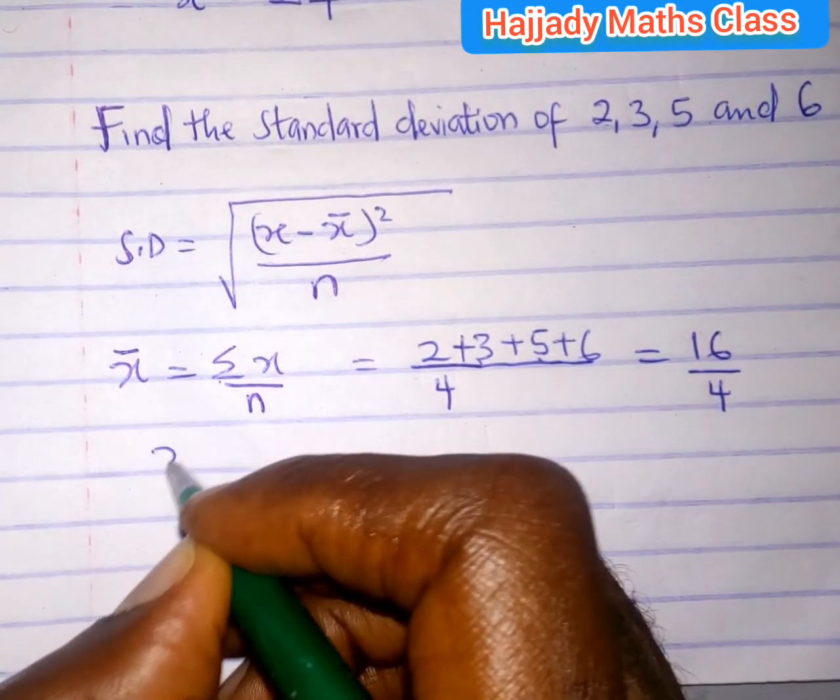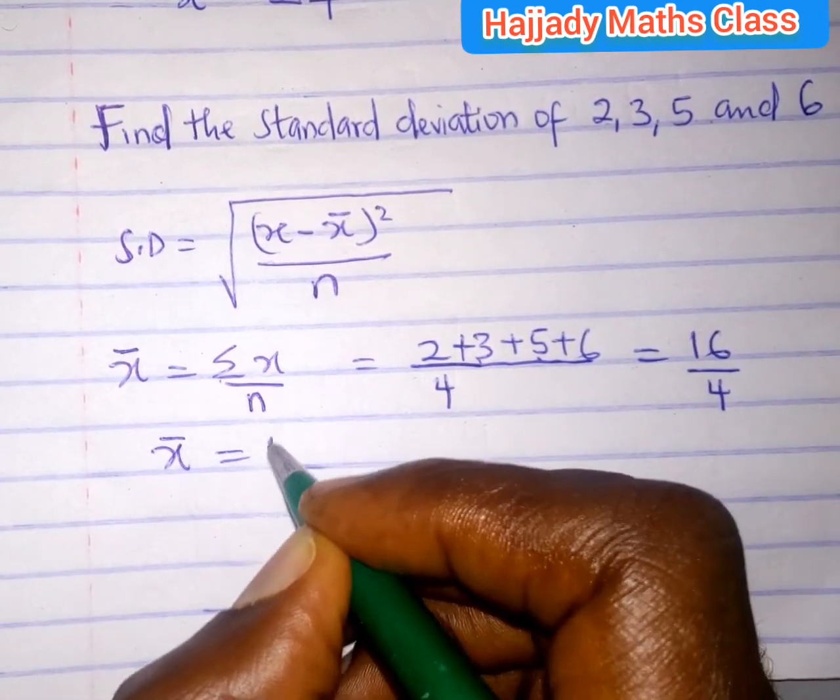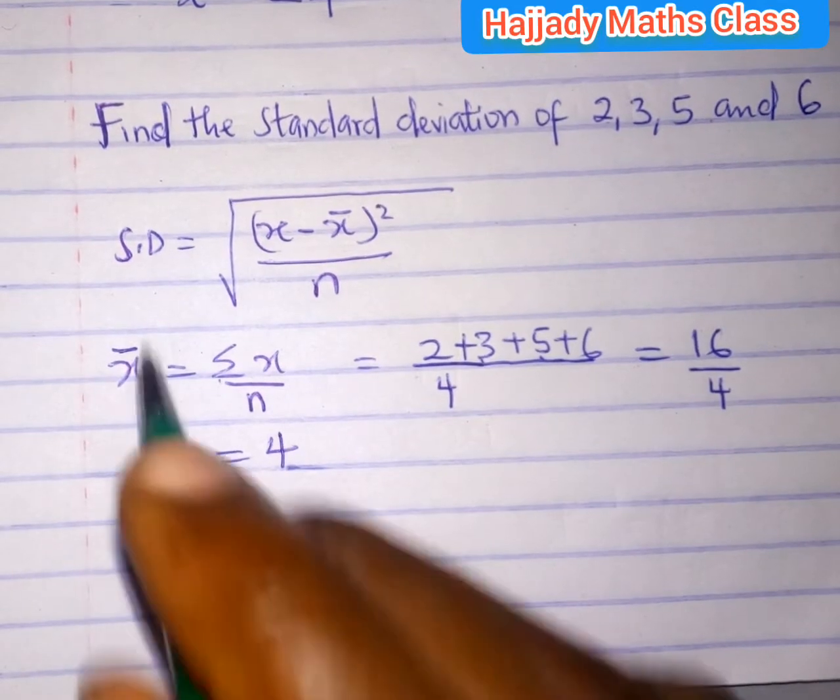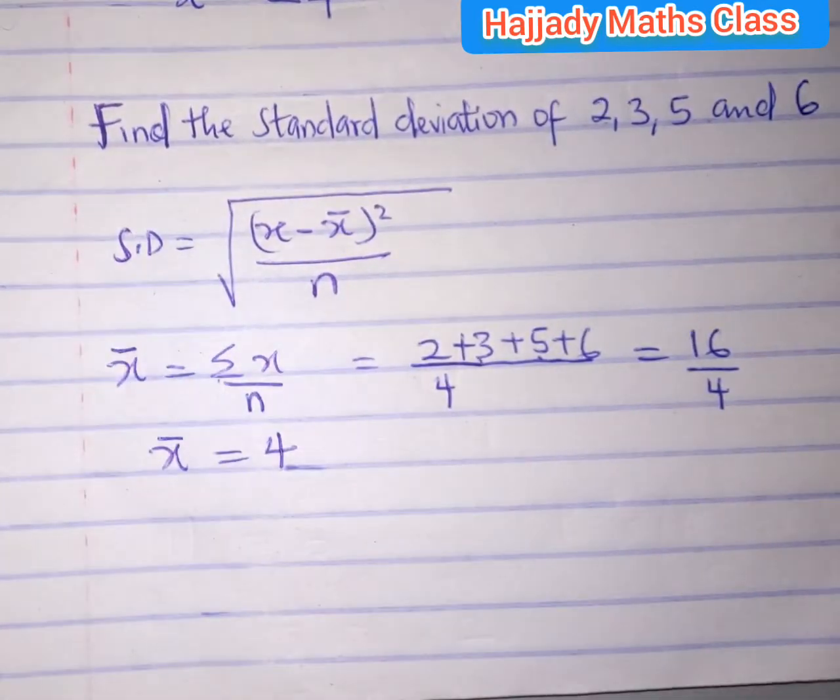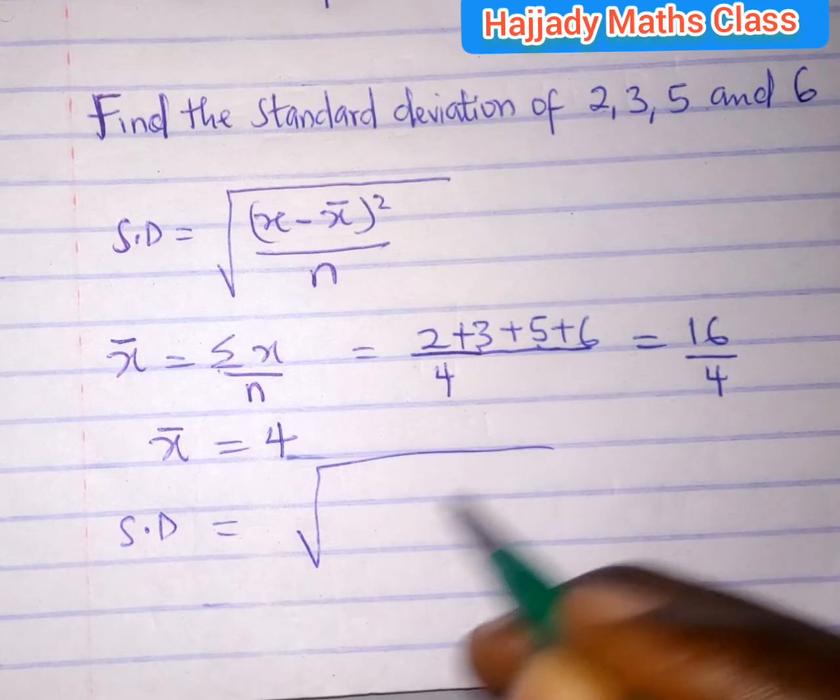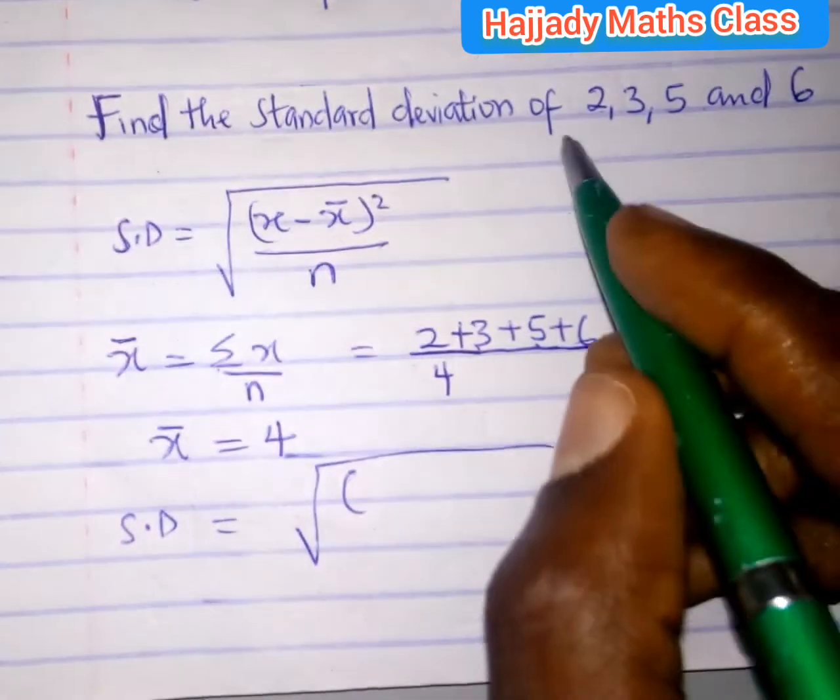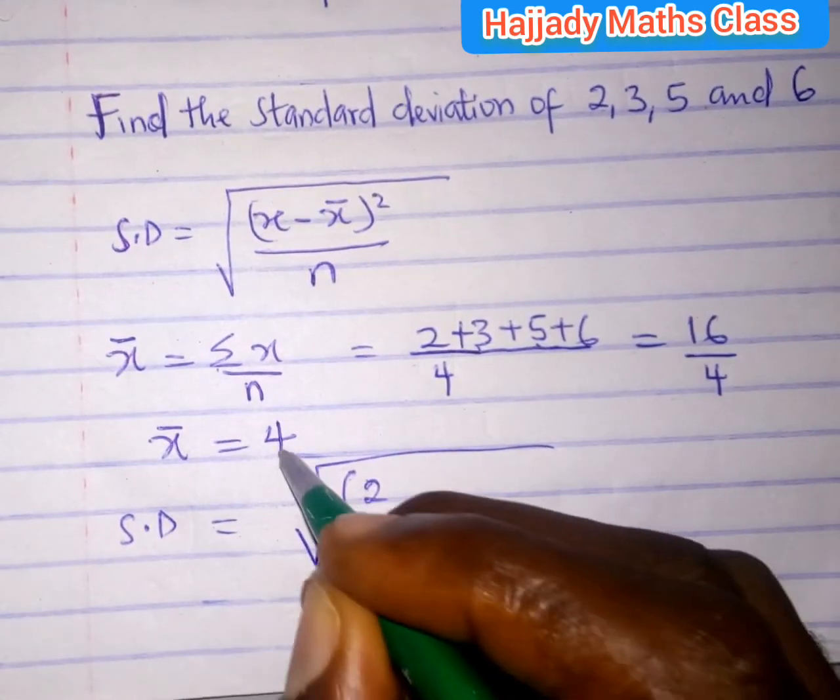Now, going back to this formula, our standard deviation will be square root of: x, which is 2, minus the mean, which is x bar, which is 4, all squared, plus the second sample, which is 3, minus 4, all squared,